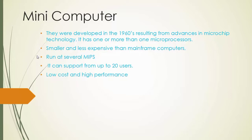Number three: Minicomputer. Minicomputers were developed in the 1960s resulting from advances in microchip technology. They have one or more microprocessors. They are smaller and less expensive than mainframe computers. Minicomputers run at several MIPS and can support up to 20 users. They offer low cost and high performance.